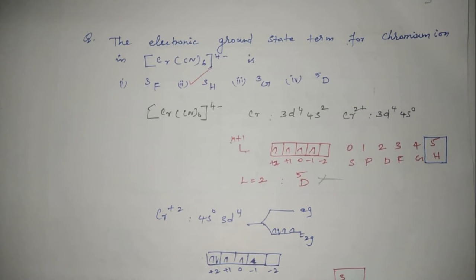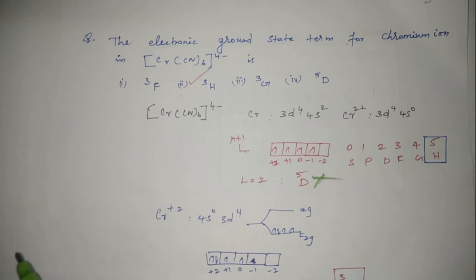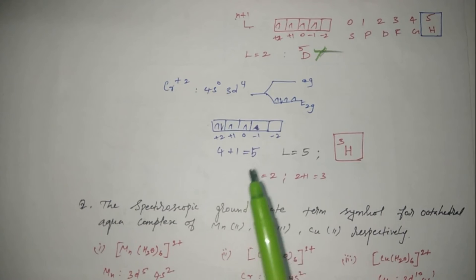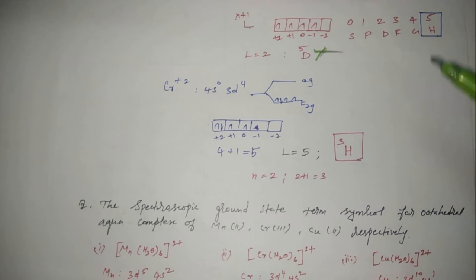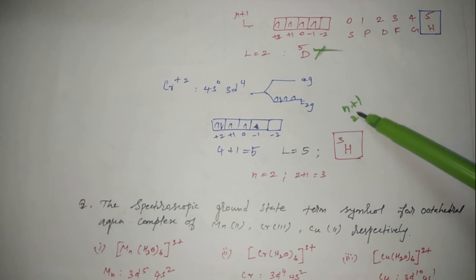A common mistake is to apply the n+1 formula directly: 4+1=5, giving term L=2 as 5D — but this is the wrong answer. Since CN⁻ is a strong ligand, it will pair the electrons into inner orbitals. Electrons jump from higher orbitals, so the number of unpaired electrons is only 2. Therefore n+1 = 2+1 = 3, and spin multiplicity is 3.